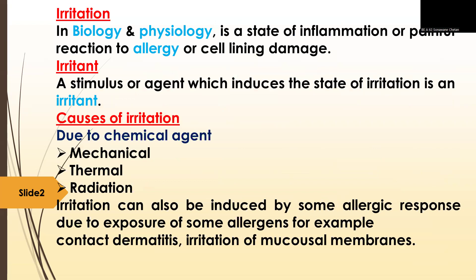Irritation, in biology and physiology, is a state of inflammation or a painful reaction to allergy or cell lining damage. An irritant is a stimulus or an agent which induces the state of irritation. Causes of irritation include chemical agents, mechanical, thermal, and radiation factors. Irritation can also be induced by an allergic response due to exposure to some allergens — for example, contact dermatitis or irritation of the mucosal membrane.